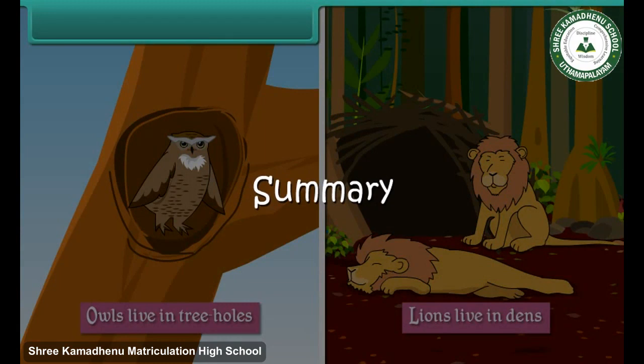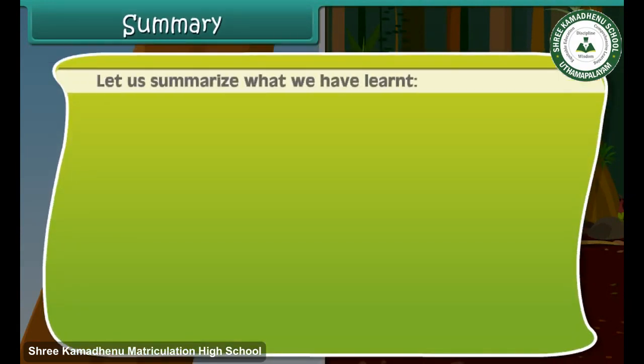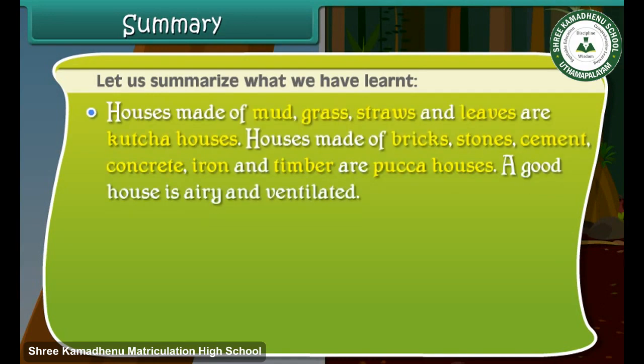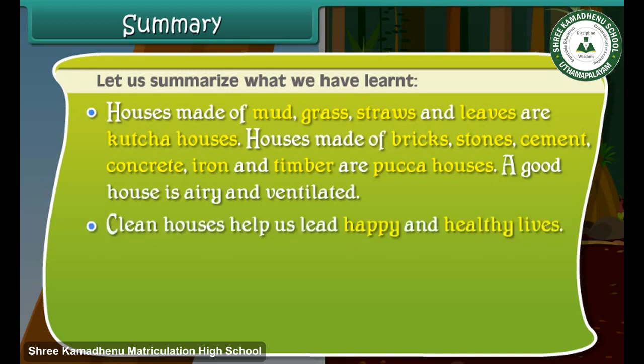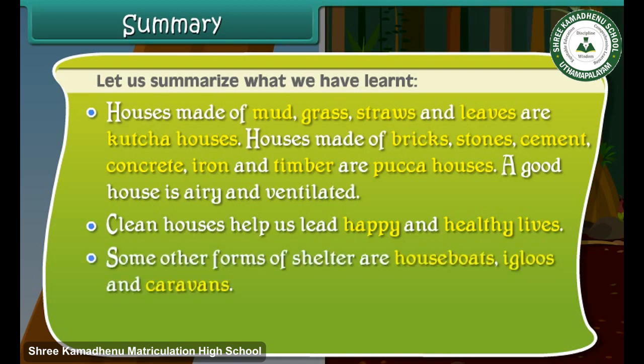Let us summarize what we have learned. Houses made of mud, grass, straws and leaves are kacha houses. Houses made of bricks, stones, cement, concrete, iron and timber are pakka houses. A good house is airy and ventilated. Clean houses help us lead happy and healthy lives. Some other forms of shelter are houseboats, igloos and caravans.